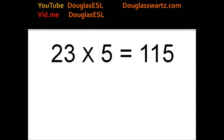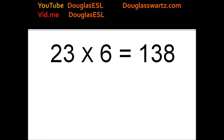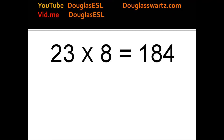23 times 5 equals 115. 23 times 6 equals 138. 23 times 7 equals 161. 23 times 8 equals 184.